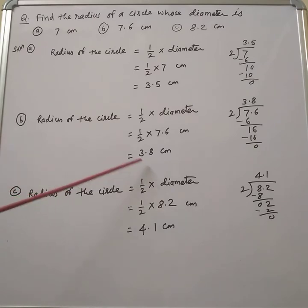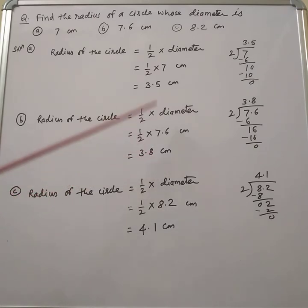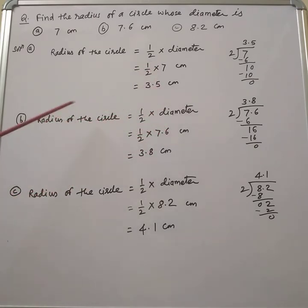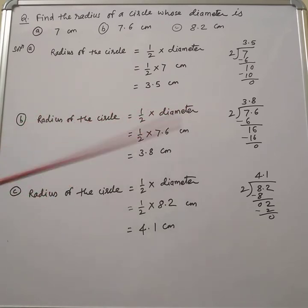If we multiply 3.8 by 2, we get 7.6. So the radius of the circle is equal to half of the diameter.